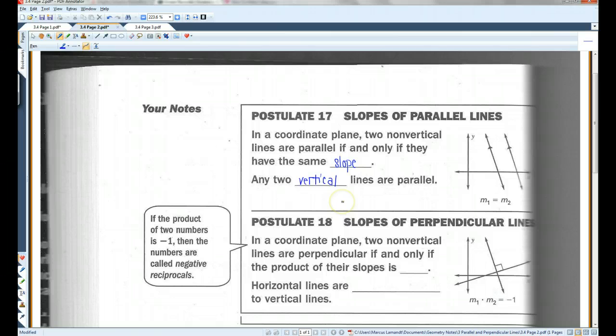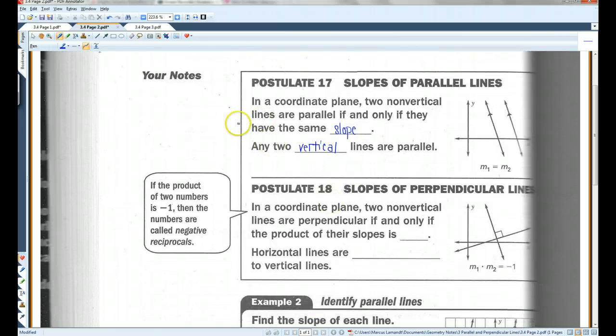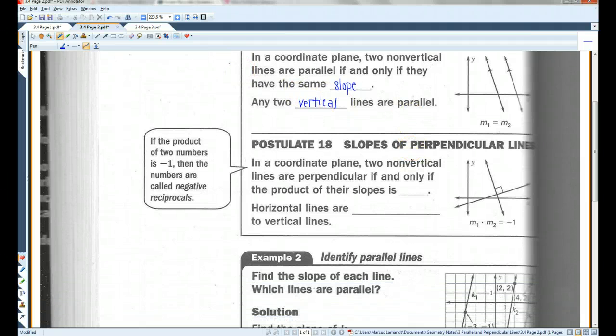Now, they say this because vertical lines have no slope. So, if two lines both have no slope, they're both undefined, then they're parallel.